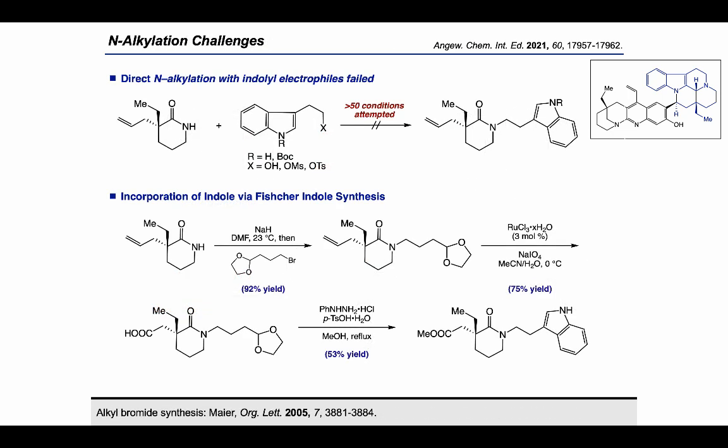Unfortunately, N-alkylations with tryptophan-derived electrophiles failed to deliver the desired product. As a result, we elected to incorporate the indole via Fischer indole synthesis. This was accomplished by first performing N-alkylation to access a dioxolane intermediate, followed by oxidative cleavage of the alkene to afford the carboxylic acid. The resulting aldehyde generated from deprotection undergoes Fischer indolization with concomitant esterification to provide the methyl ester lactam in 53% yield.